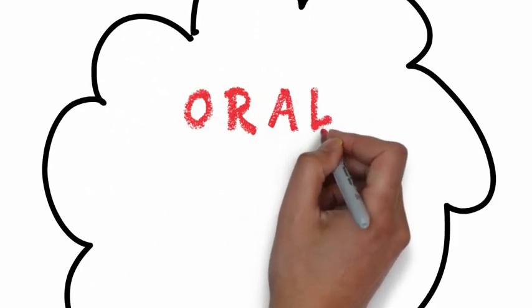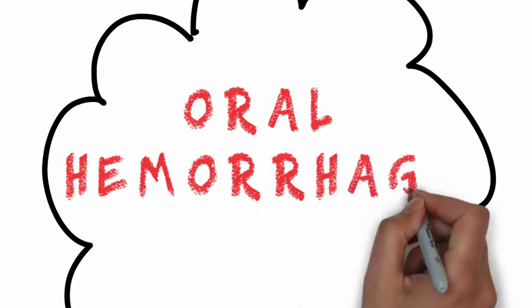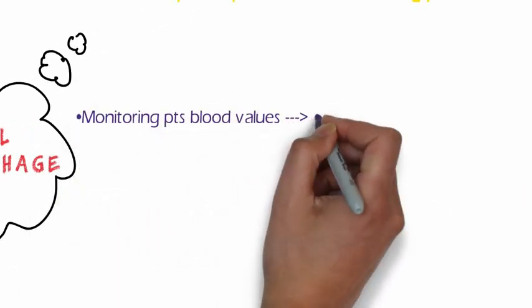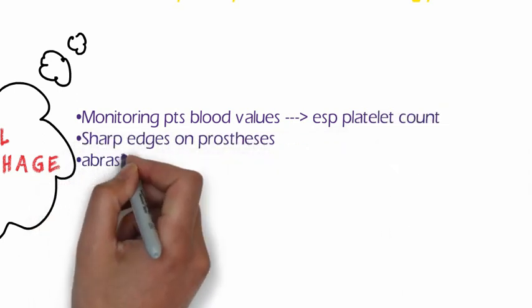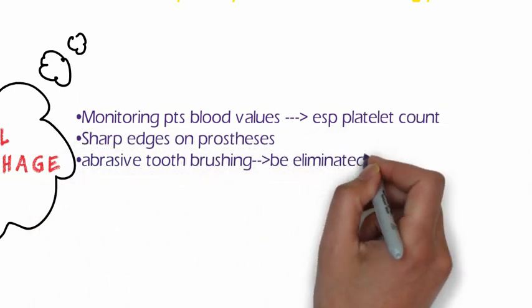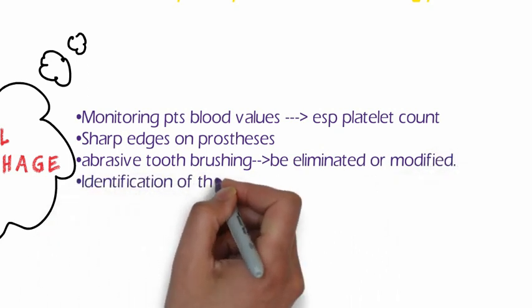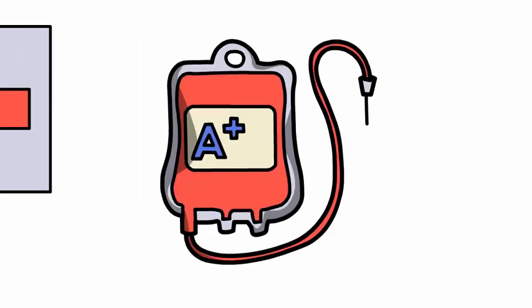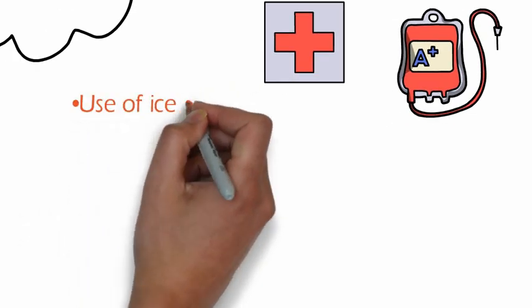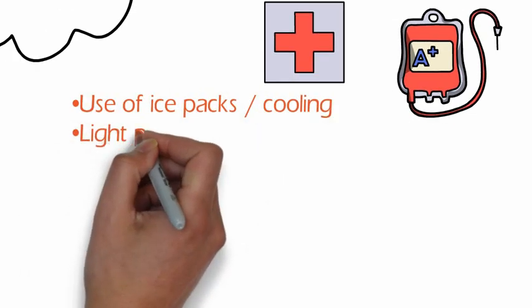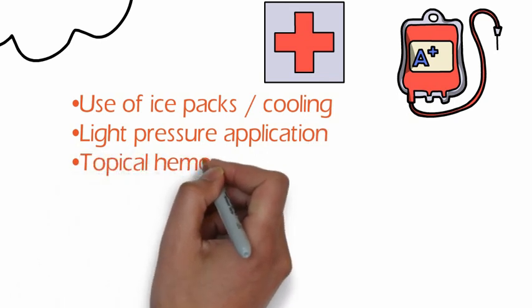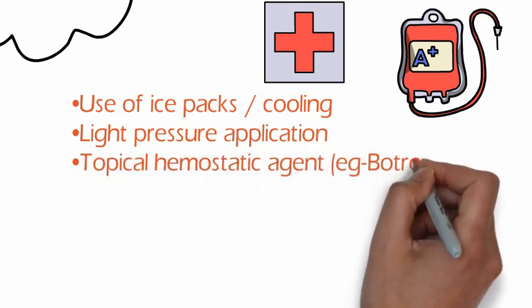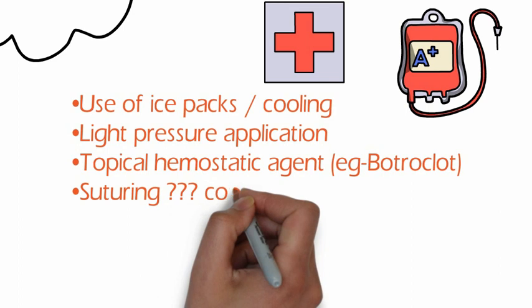For management of oral hemorrhage, platelet values below 25,000 per cubic millimeter can be potentially fatal, so monitoring of the patient's platelet count is extremely important. Any potential cause of bleeding — such as sharp edges of prostheses and abrasive tooth brushing — should be eliminated. Always identify the site of bleeding to achieve hemostasis. Palliative treatment includes use of cold packs, application of light pressure, and topical hemostatic agents. Surgery is controversial as it can create additional bleeding sites.